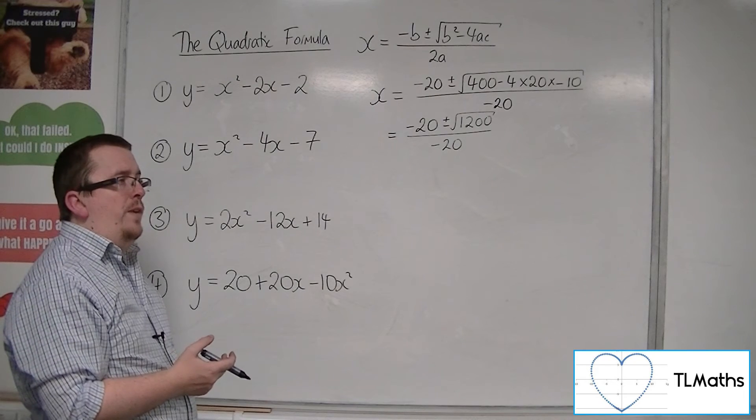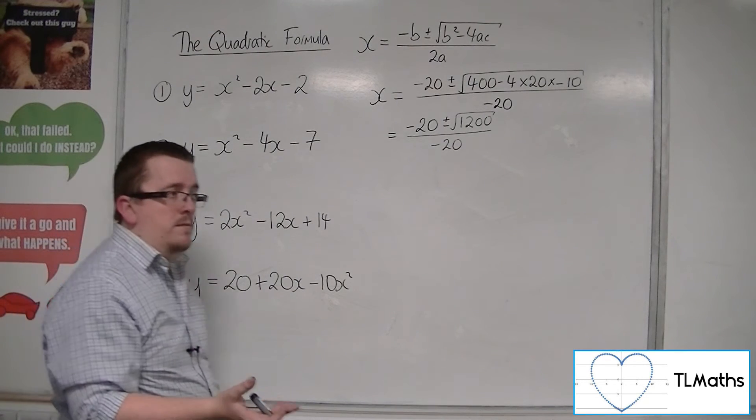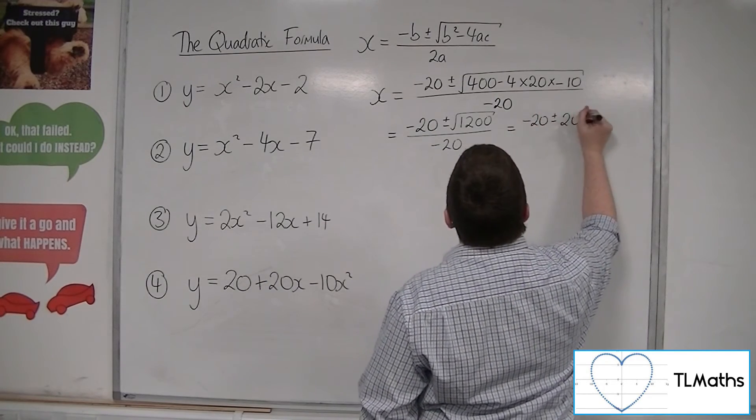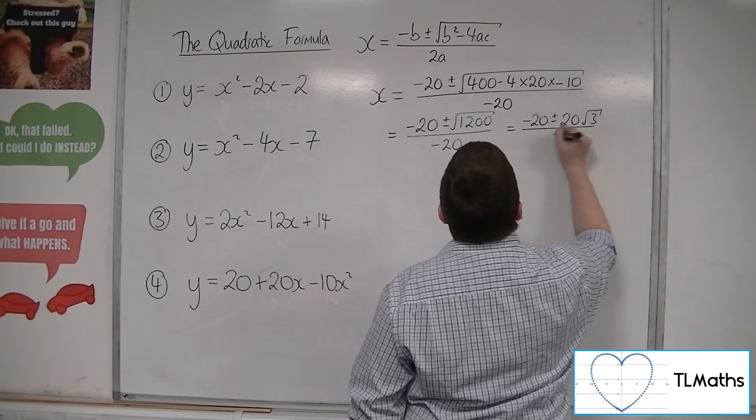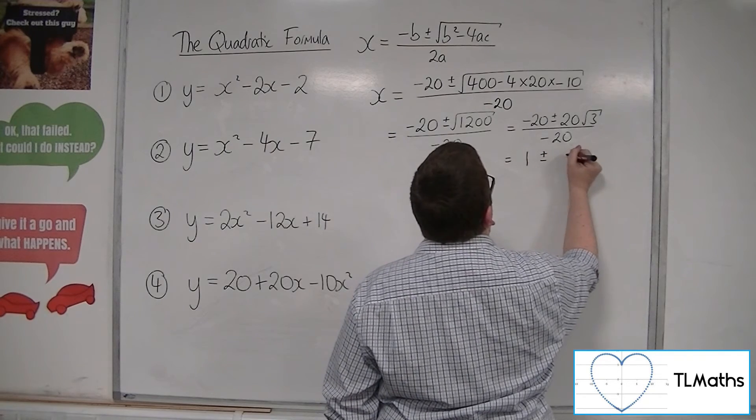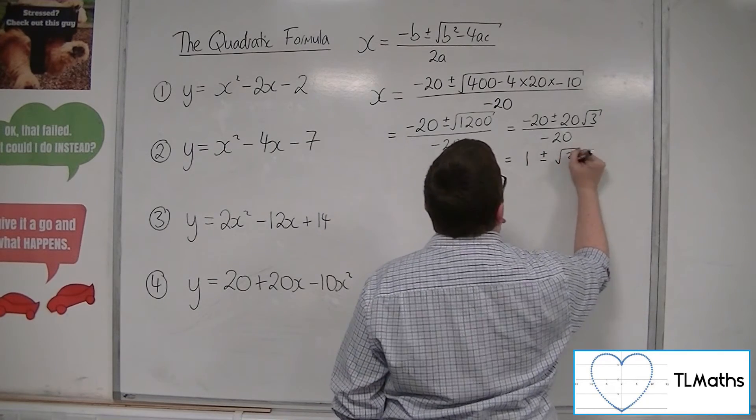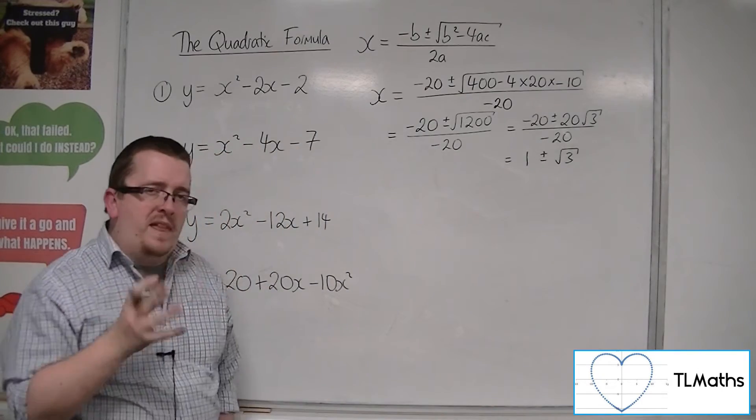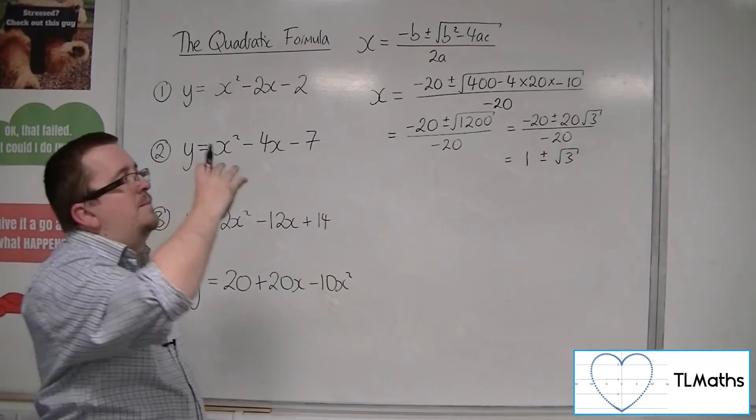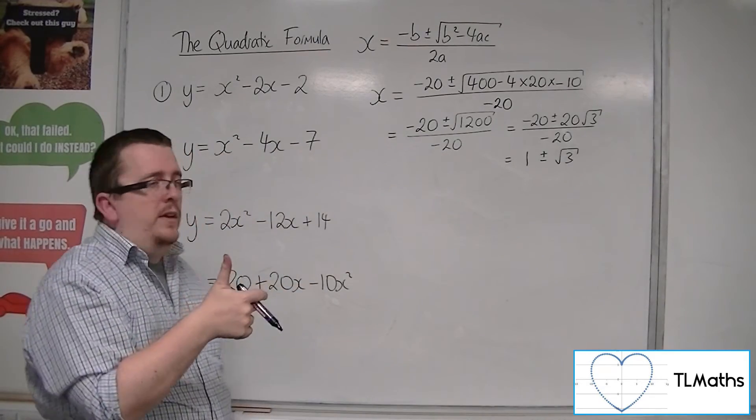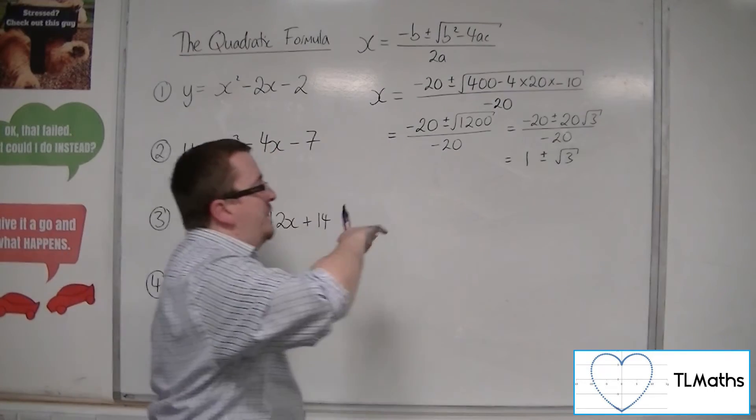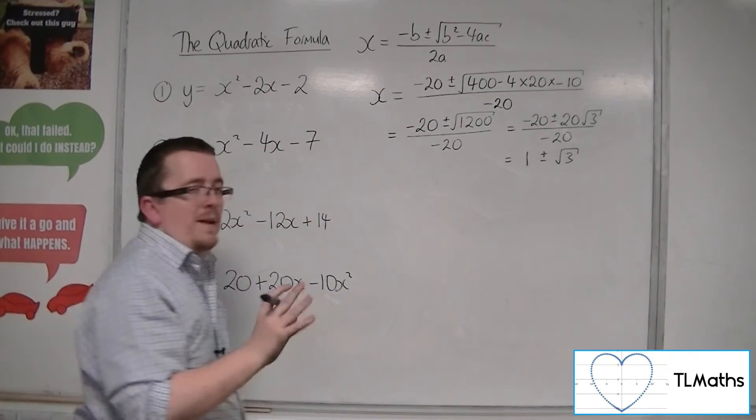Now, 1200 is 400 times 3, so that's minus 20 plus or minus 20 root 3 over minus 20. So that's 1 plus or minus root 3. Now, when you're dividing through by that minus 20, sometimes there can be a little bit of worry about that plus minus. You could obviously write it as minus plus, but when you're dividing through, because the plus will become negative, the negative will become positive, but it doesn't matter. OK, it won't make any difference to us.